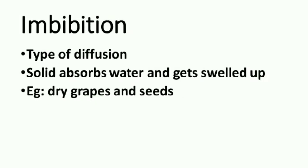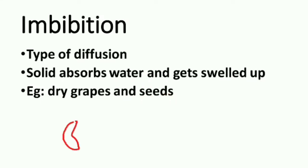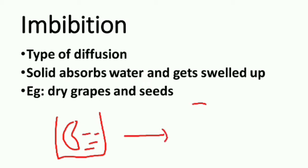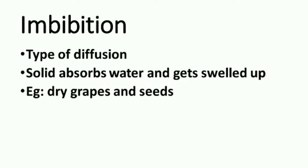Coming to imbibition. It is a type of diffusion where the solid part of the plant absorbs water and gets swelled up. For example, dry grapes and seeds. If we soak dry grapes in water, they absorb the water content and become swelled up. This process is known as imbibition.